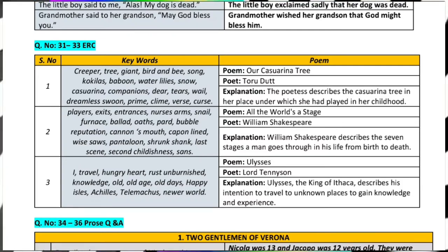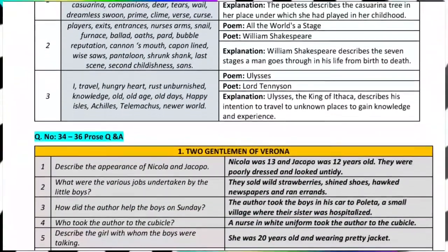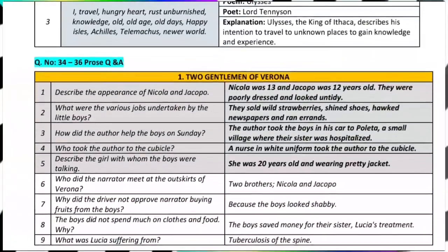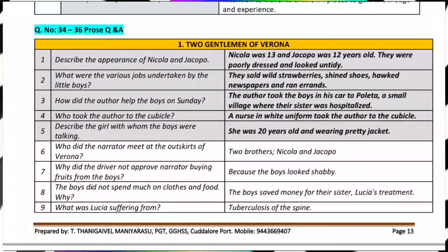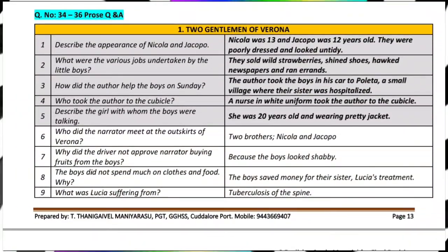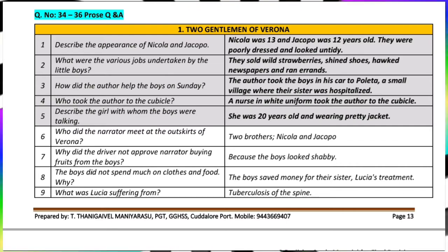Then describe the process — for example, how to make Maggie. That's how you learn process writing. Then interpretation of data — tables, pie charts, or graphs.